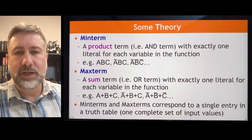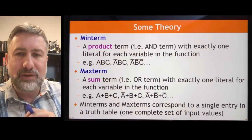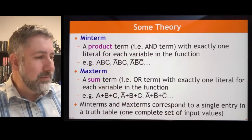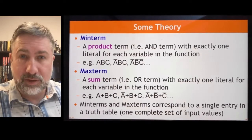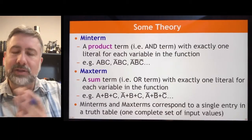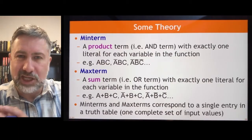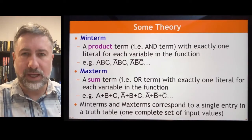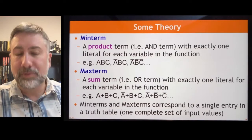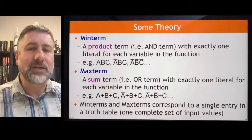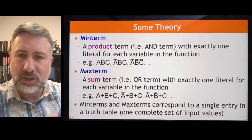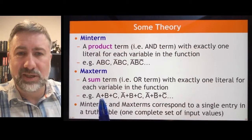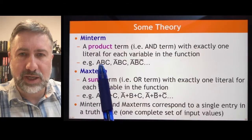The first bit of theory is that we're going to take any given function and represent it in min terms or max terms. A min term is a product term — and when we talk about product and sum, we're not talking about multiplication or addition, we're talking about AND and OR. It is useful shorthand to use multiplication to represent AND and addition to represent OR. Some things translate, some don't, but this addition sign is OR and this multiplication sign is AND.